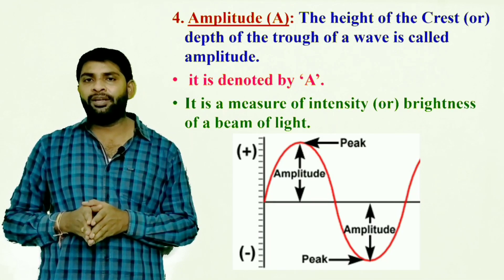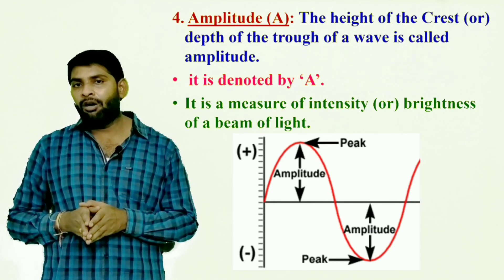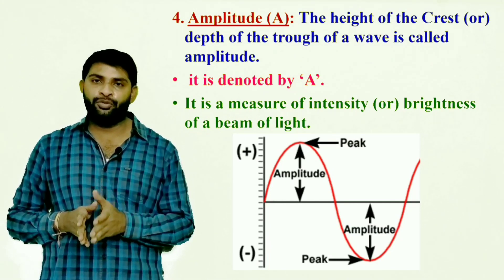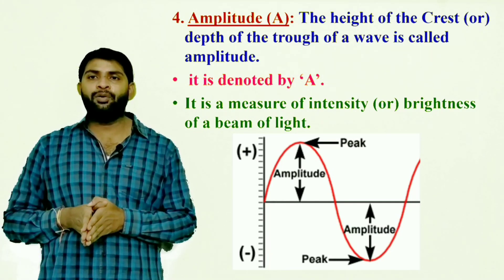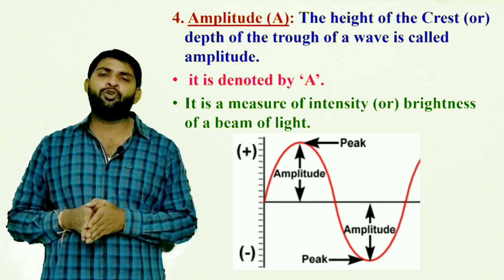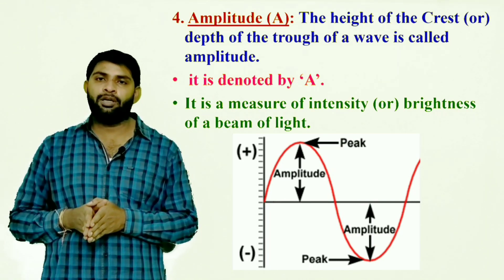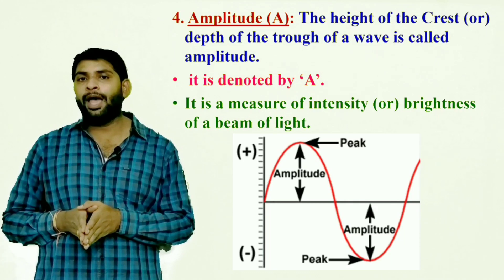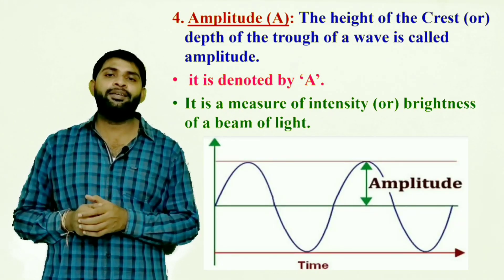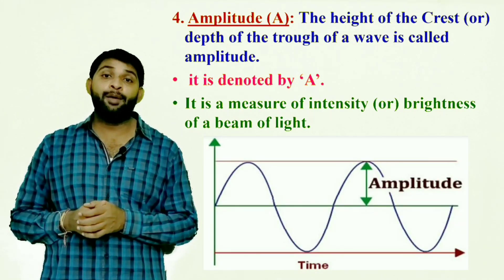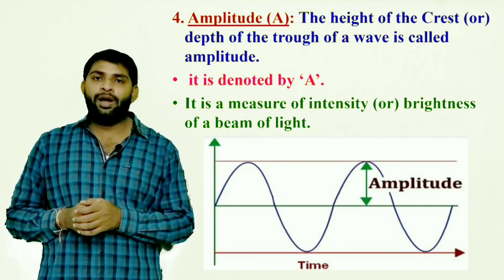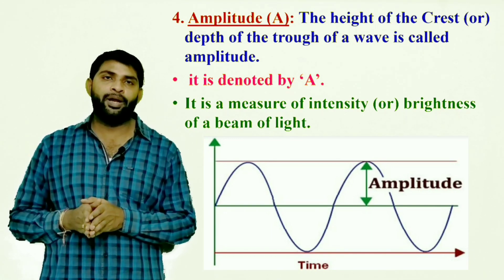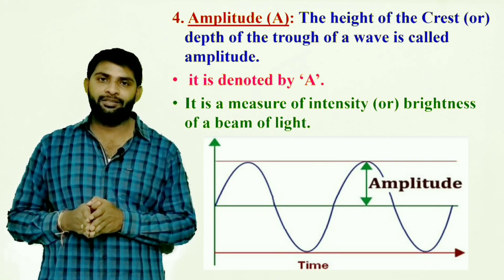Fourth property — amplitude: the height of the crest or the depth of the trough of a wave is called amplitude. It is denoted by capital A. Amplitude is a measure of the intensity or brightness of a beam of light.